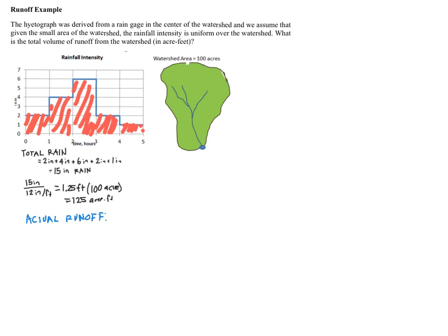The actual rainfall, or the actual runoff in this example, is maybe 60 acre feet, less than half of the amount of rain that fell. So the question that I want to ask, and that we're going to answer in this module, is where did the 65 additional acre feet go?